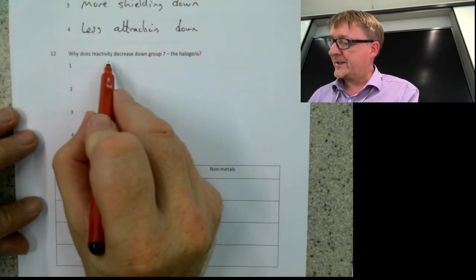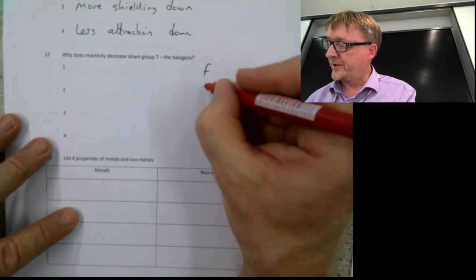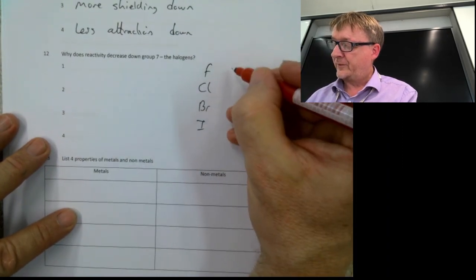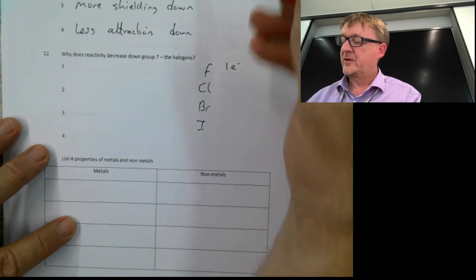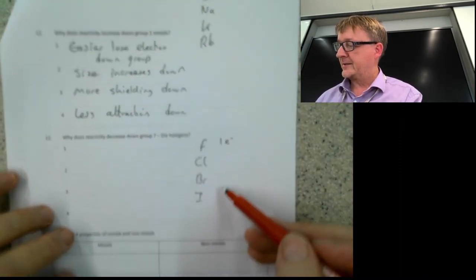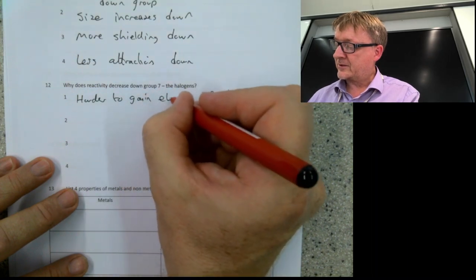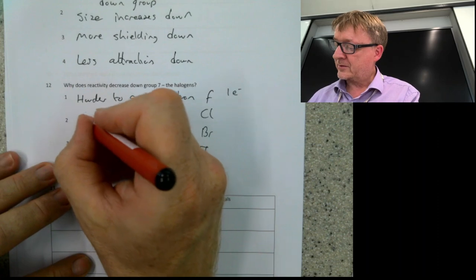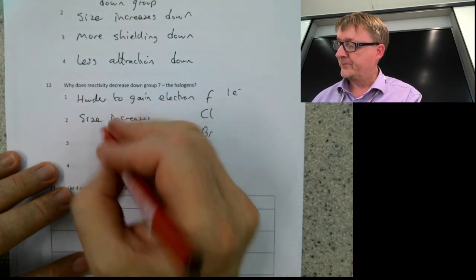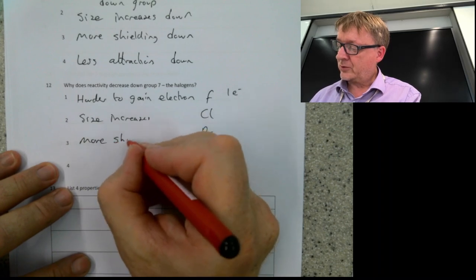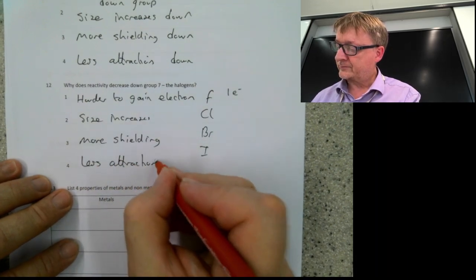Question 12: why does reactivity decrease down group 7 — fluorine, chlorine, bromine, iodine? These elements want to gain one electron each. As you go down the group, it becomes harder to gain an electron because the size increases, there is more shielding, and there is less attraction between the nucleus and the outer electrons.